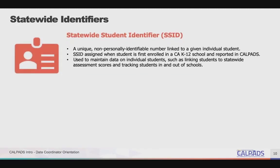The first is the Statewide Student Identifier, or SSID, which are requested through CALPADS. All students are required to be reported in CALPADS when they enroll. When students initially enroll, an SSID is requested. The SSID should follow students through their K-12 years, and they should have only one throughout that time. When requesting an SSID, it is important to select the correct one if the student was previously reported in CALPADS, and if they are new, they will need to have a new one assigned. With CALPADS, the best practice is to maintain SSIDs throughout the year, but the frequency should reflect your student mobility rates.